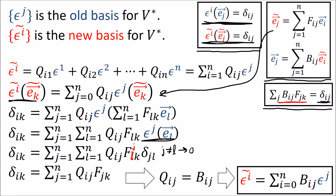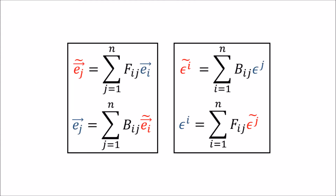This is why we write co-vector indices up top — because they transform in the opposite way that basis vectors do. The transformation rules for basis vectors and co-vectors are summarized here, and again, they are opposites.